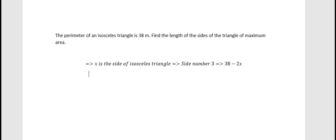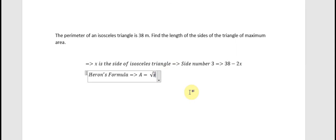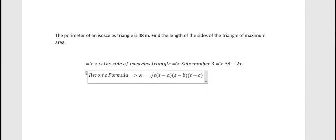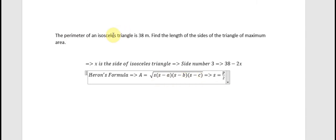And we will apply Heron's formula to find the area of the triangle. We have Area = √(S(S−a)(S−b)(S−c)), where S is the perimeter divided by 2 — this means a half of the perimeter. And a, b, c are the sides of the triangle. We will apply this formula in this situation.